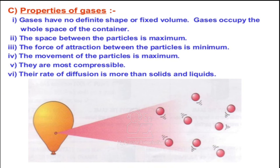Because spacing is maximum, the force of attraction between them is minimum. And because the force of attraction is minimum, their kinetic energy is maximum, and the diffusion property is also maximum. The movement of particles is maximum because their kinetic energy is maximum. Next, they are most compressible — gases can be easily compressed because the forces of attraction between their particles are minimum.